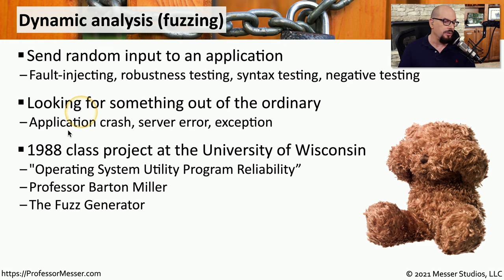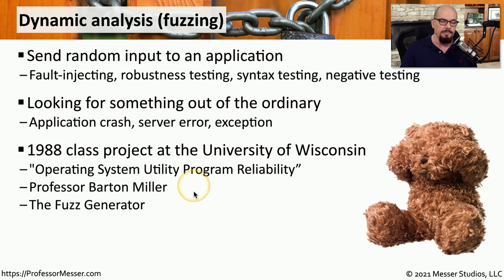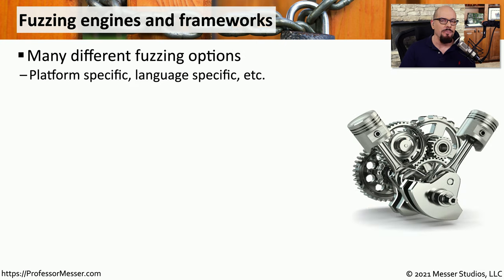A standard fuzzing framework started with a 1988 class project at the University of Wisconsin, where they began taking applications and running their own utilities to find vulnerabilities. They called this the Operating System Utility Program Reliability with Professor Bart Miller. As you can imagine, there are many different types of fuzzing tests that you can perform on an individual application, specific to a particular application platform or operating system.